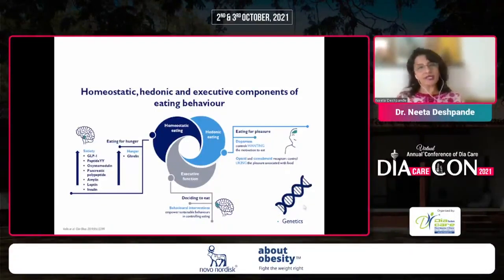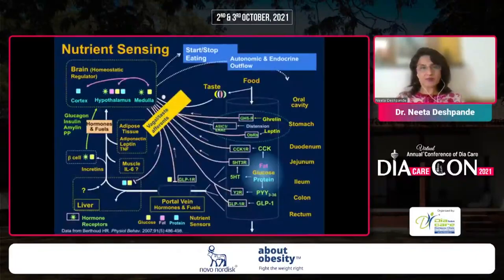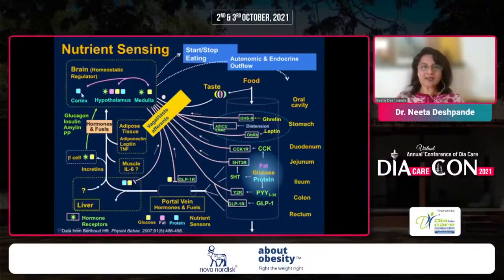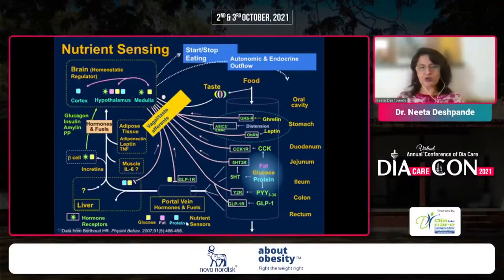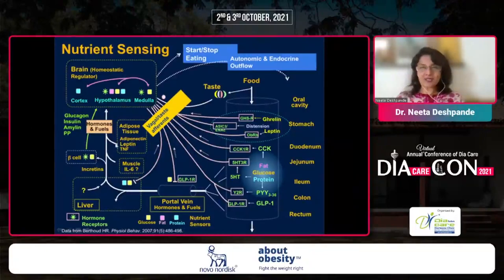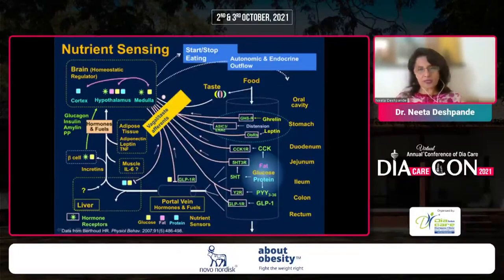Added to all of this is genetics — genetic predisposition is another dimension in all these eating behaviors. What happens is when you start to eat food, right from the oral cavity to the rectum, several hormones come into play sending signals to the brain. Apart from that, when food enters the portal vein, these nutrients cause nutrient sensing. Glucose, fat, and protein act through the liver, muscle, beta cell, and adipose tissue, also sending signals to the brain — this is the homeostatic mechanism.